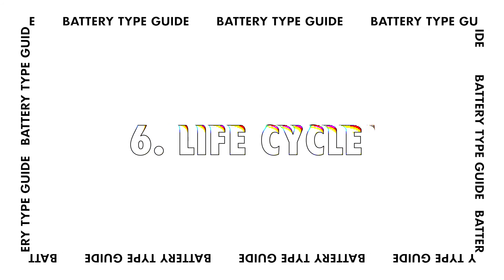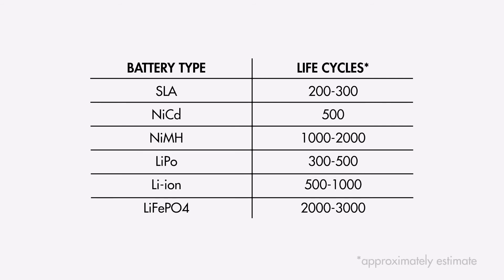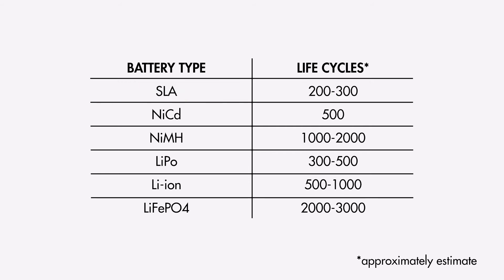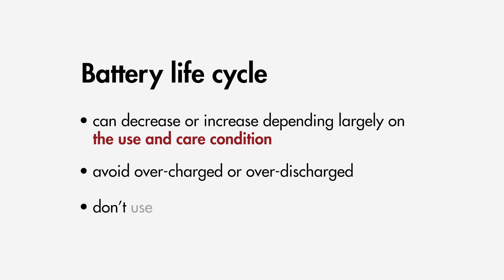The next difference is life cycle — the number of charge and discharge cycles a battery can complete before losing its performance, indicating the battery's longevity. Lithium iron phosphate batteries have the highest life cycle and are often used in power tools or energy storage like portable power stations. Sealed lead acid batteries have the lowest cycle life of around 200 to 300 cycles. Note that life cycle can decrease or increase depending on use, care, and conditions — constantly leaving a battery overcharged or over-discharged, or using it in extreme temperatures, will shorten its life cycle.